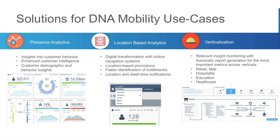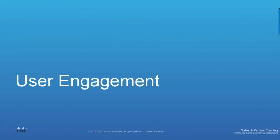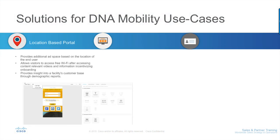User engagement through custom portals provides additional ad space based on the location of the end user. It allows visitors to access free Wi-Fi after accessing content-relevant videos and information, incentivizing onboarding for end users. Onboarding a user to the venue's Wi-Fi also improves the accuracy and quality of the insights available through analytics and can provide valuable insights into a facility's customer base through demographic reports. A variety of custom templates are available on CMX to tailor social login and SMS-based registration portals for your enterprise.